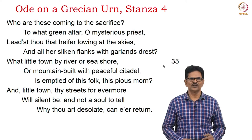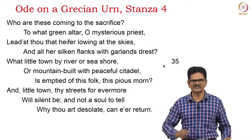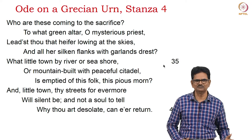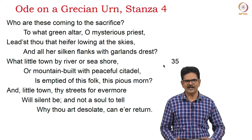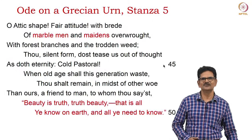Stanza four: 'Who are these coming to the sacrifice? To what green altar, O mysterious priest, lead'st thou that heifer lowing at the skies, and all her silken flanks with garlands dressed? What little town by river or sea-shore, or mountain-built with peaceful citadel, is emptied of this folk, this pious morn? And, little town, thy streets for evermore will silent be; and not a soul to tell why thou art desolate, can e'er return.'